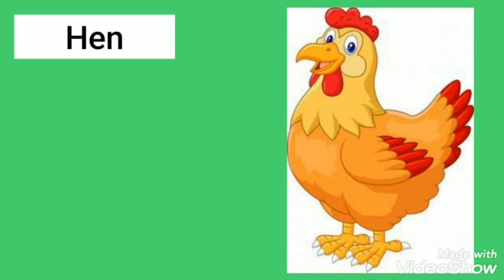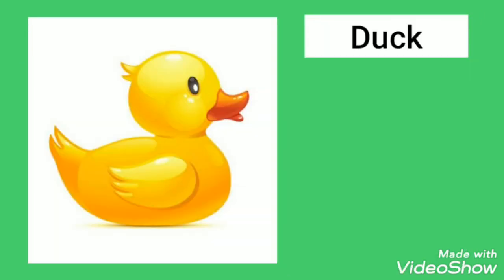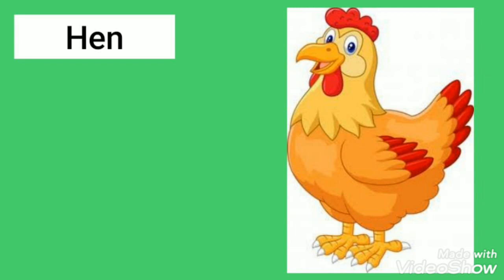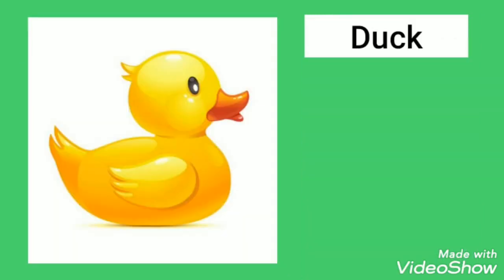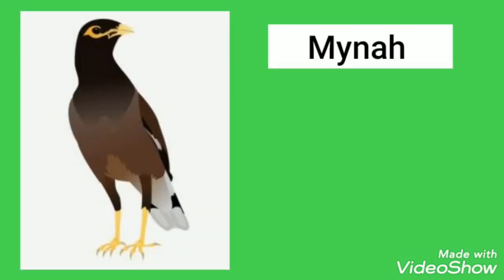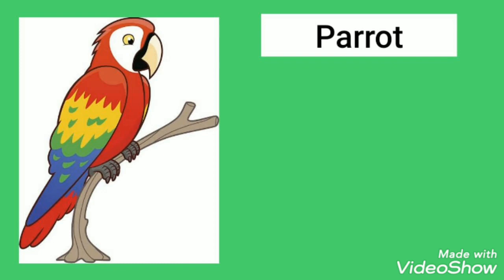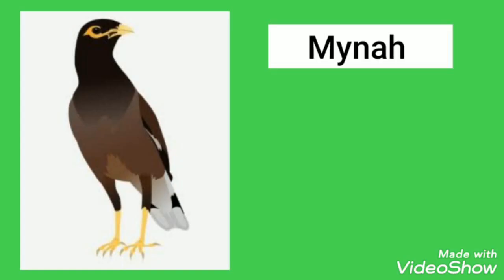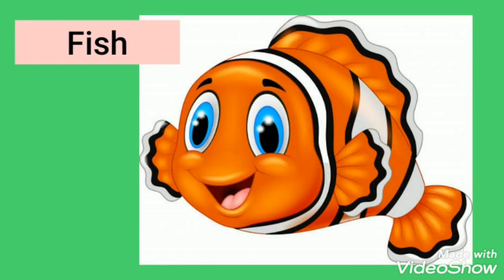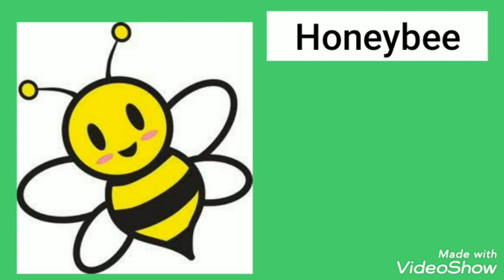Hen and ducks lay eggs which are sold in the market. Parrots and mainas are kept as pets at home in a cage. Fish is good for health — it contains a lot of proteins and other essential oils. Bees give us honey, which is very sweet in taste and good for health.